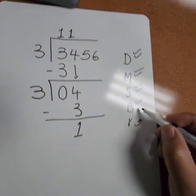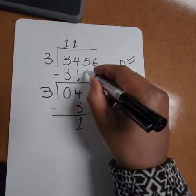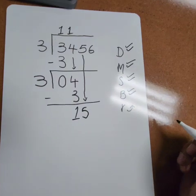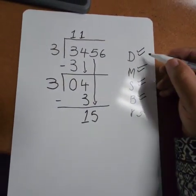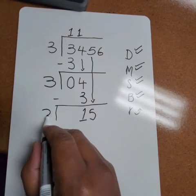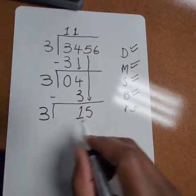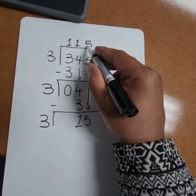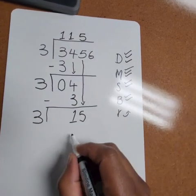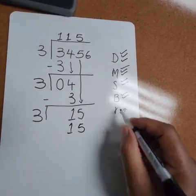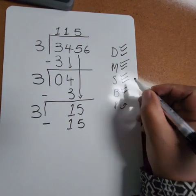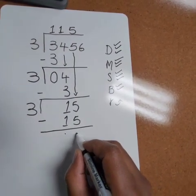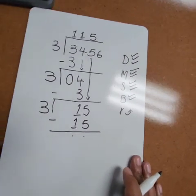After we've subtracted, we need to bring down. Remember, as long as there's a neighbor to bring down, we need to continue until we are done. Now we go back. We repeat. 15 divided by 3, or how many threes are in 15? Our answer is 5. 5 multiplied by this 3 will give us 15. Then we need to subtract 15 minus 15, and we have 0.